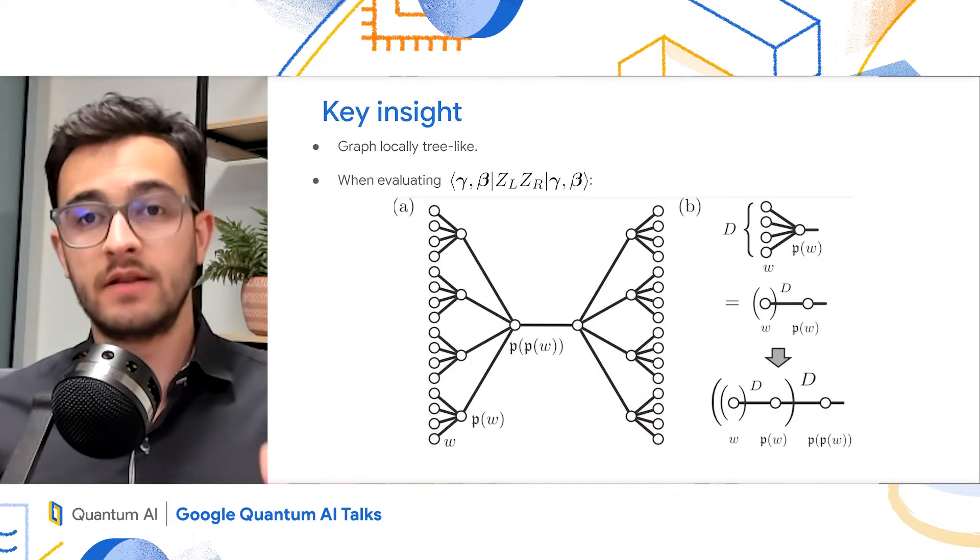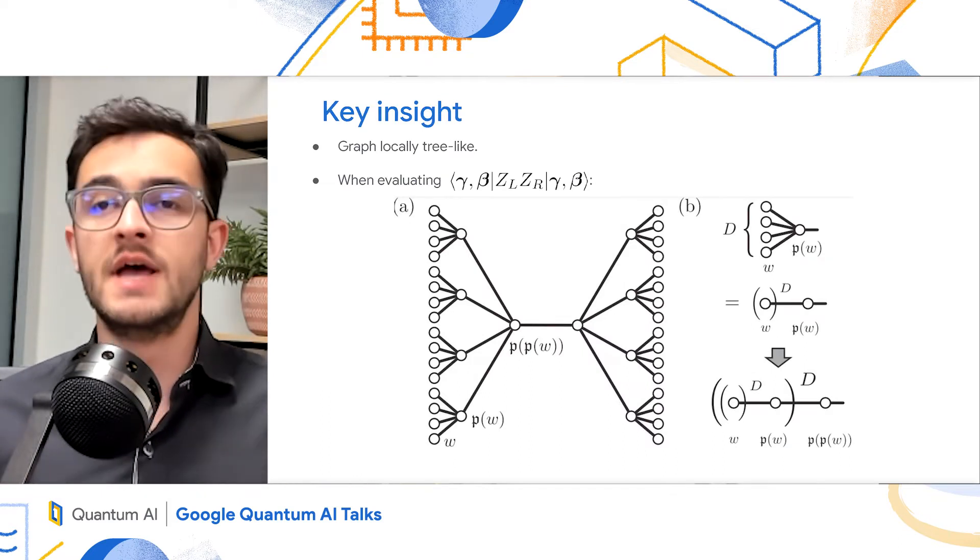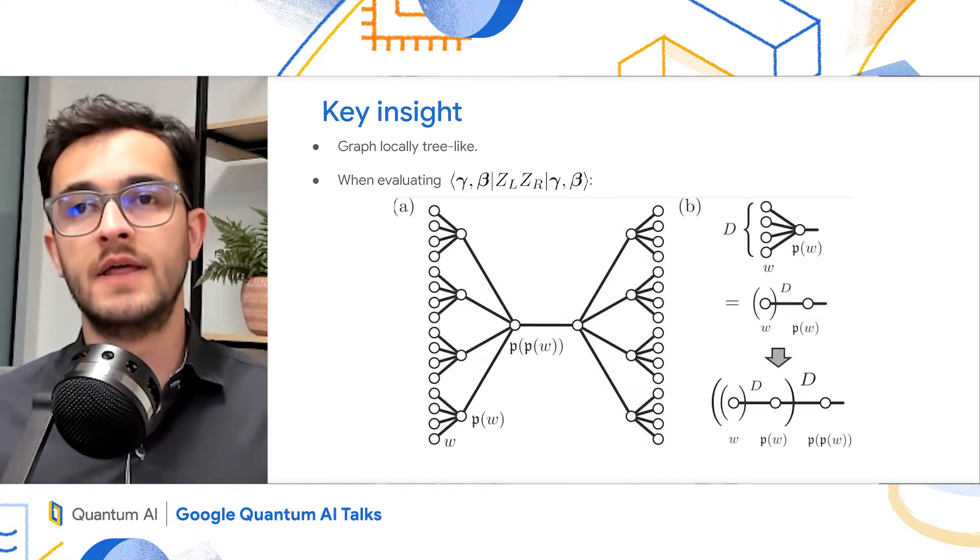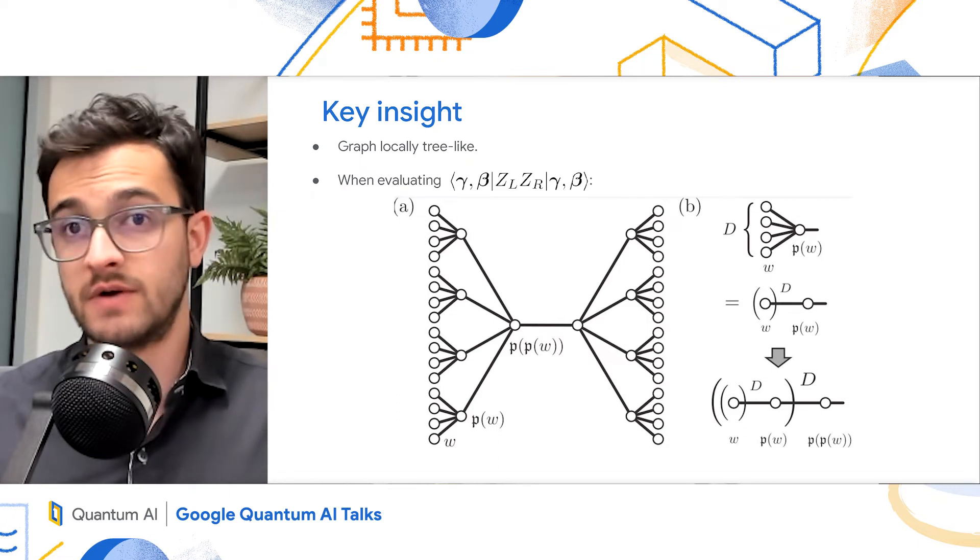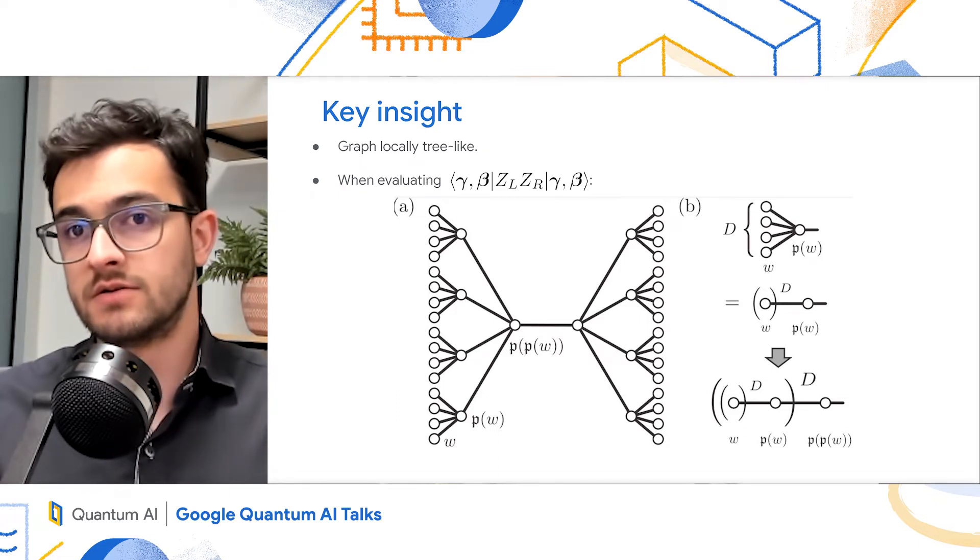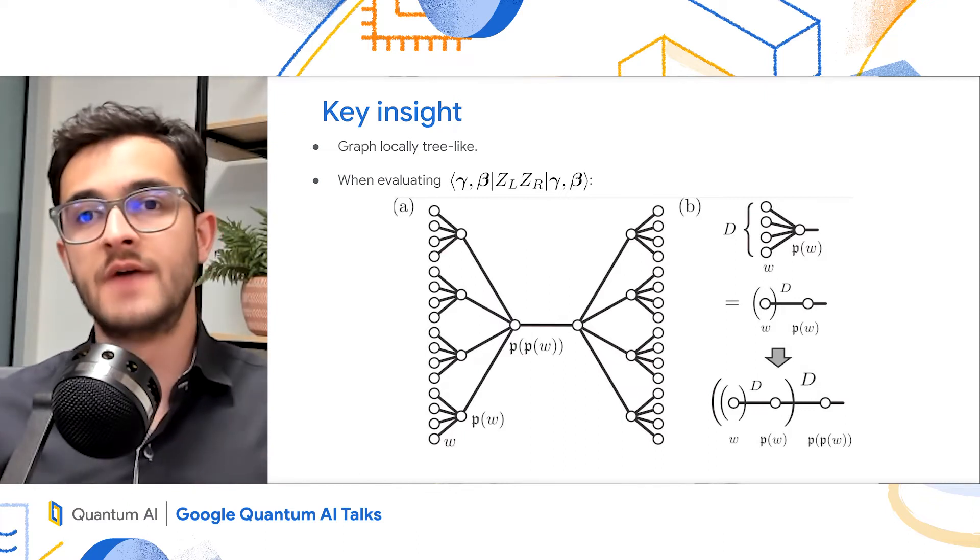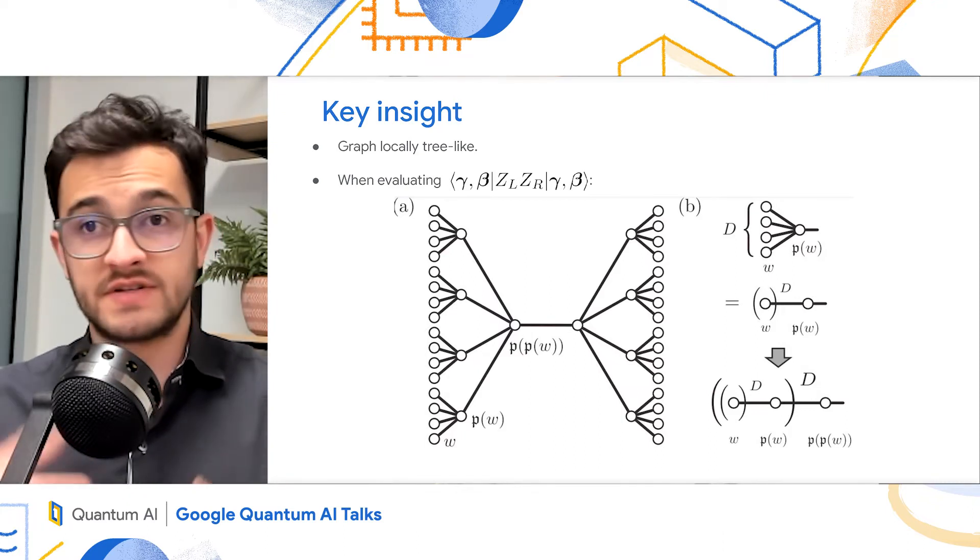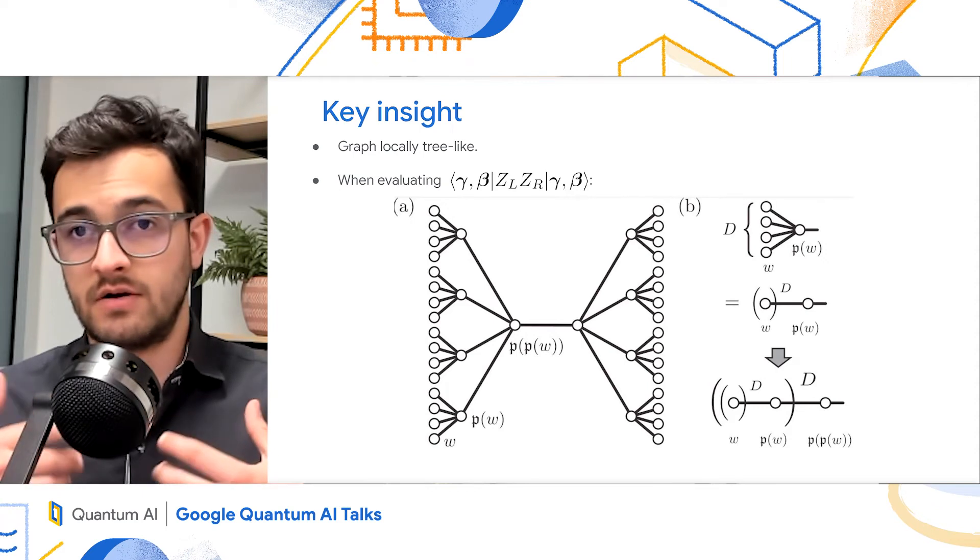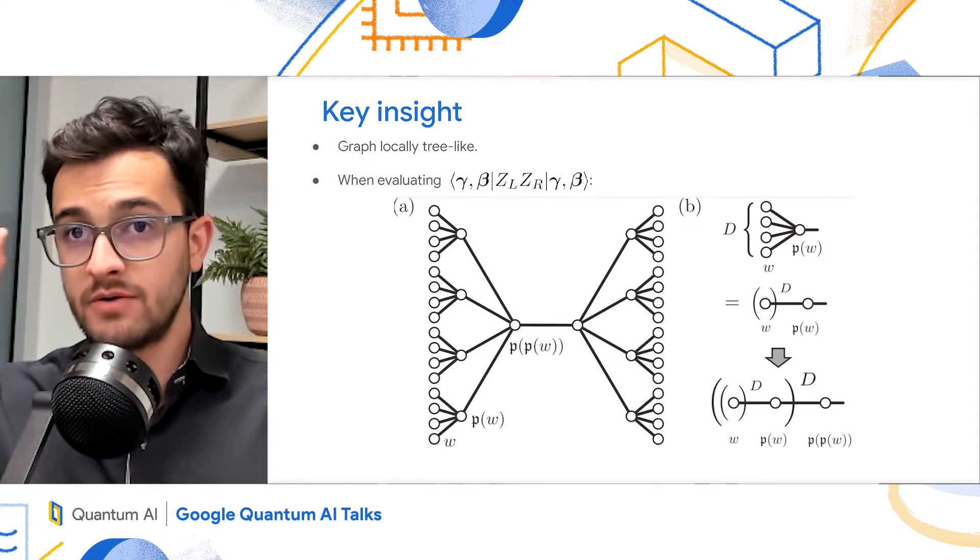So the key insight that allowed us to give this iteration is as follows. Given the assumption that the graphs don't have small cycles, and we actually need for the graphs to be girth at least 2p plus 1, locally, everything looks like a tree. So the QAOA is a local algorithm. And in the eyes of the QAOA, when you analyze, when you compute the expected value of some edge...